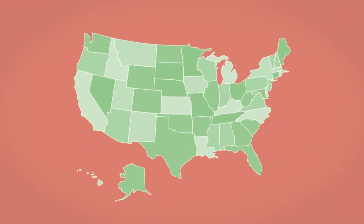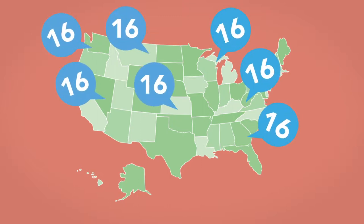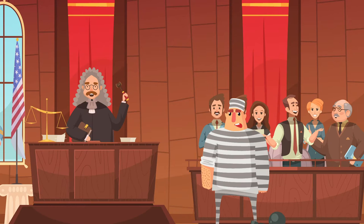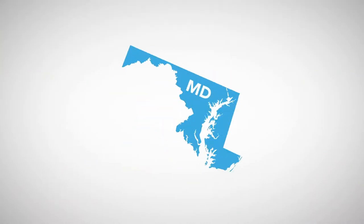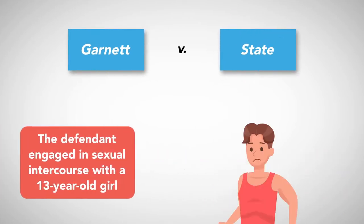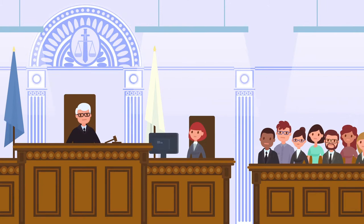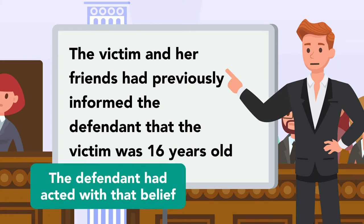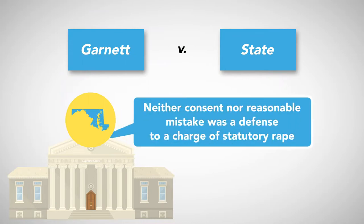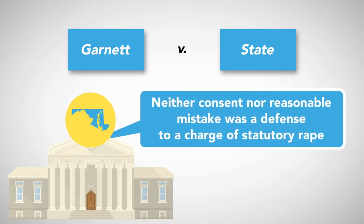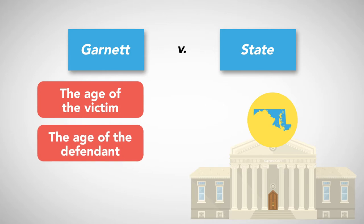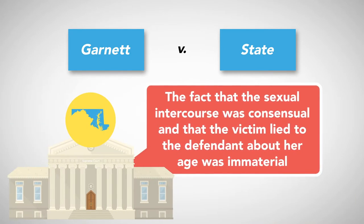Statutory rape is a term used to describe sexual relations with underage victims. There is no requirement of force, as the minor is not considered capable of consent even if he or she did express consent. The age of consent can vary by state. Most states set the age of consent at 16, but some states set it at age 17 or 18. Statutory rape is a strict liability crime, where a defendant can be convicted even if he did not know that the victim is underage. For example, in the Maryland case Garnett v. State, the defendant engaged in sexual intercourse with a 13-year-old girl. Evidence suggested the victim had previously informed the defendant she was 16 years old. The Maryland Supreme Court held that neither consent nor reasonable mistake was a defense to statutory rape, because the crime only required proof of three elements: the age of the victim, the age of the defendant, and that an act of sexual intercourse occurred. The fact that the sexual intercourse was consensual, and that the victim lied to the defendant about her age, was immaterial.